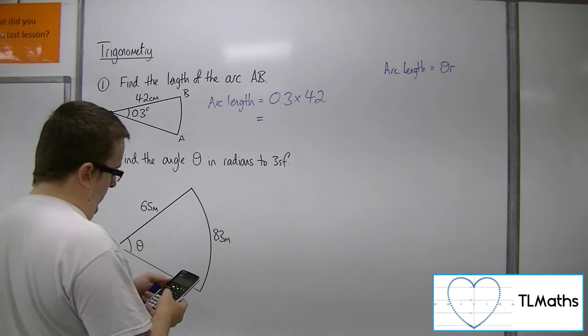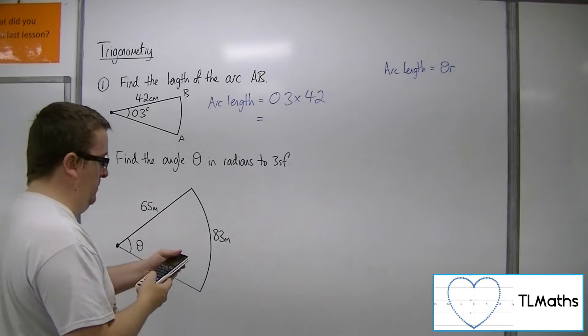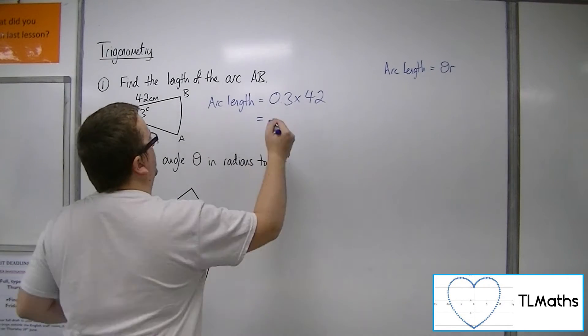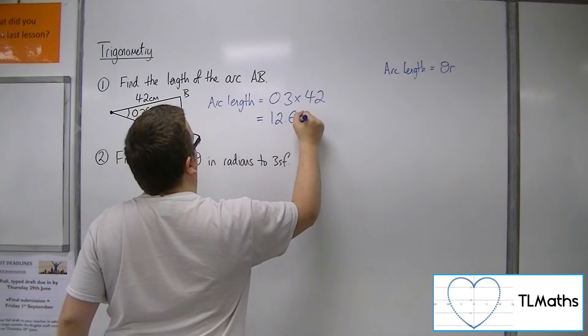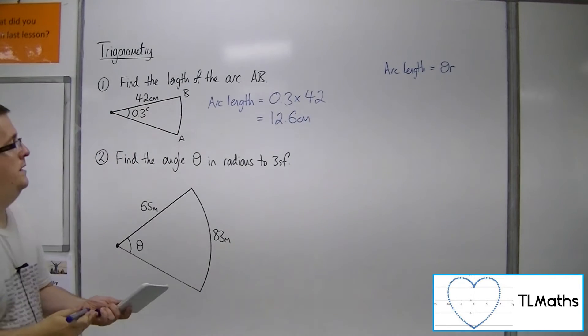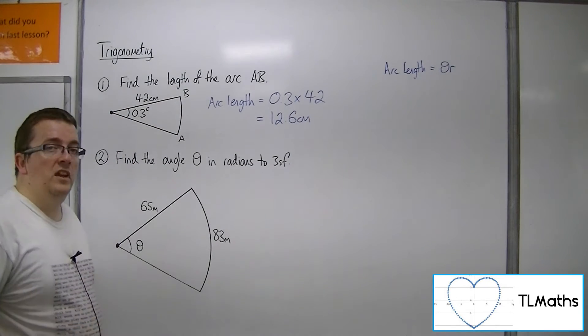So 0.3 times 42 is 12.6 centimeters. So that is the answer to number one.